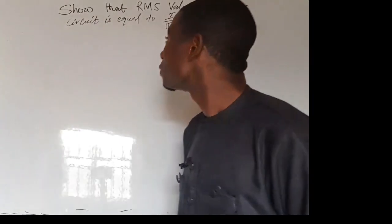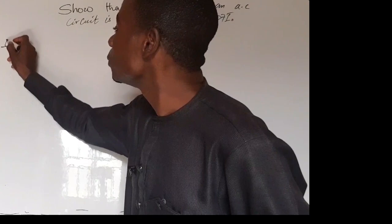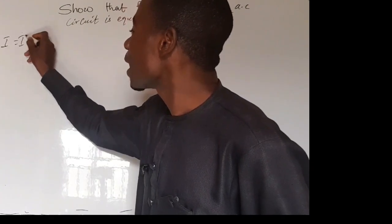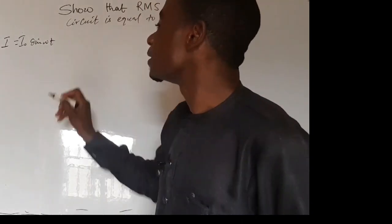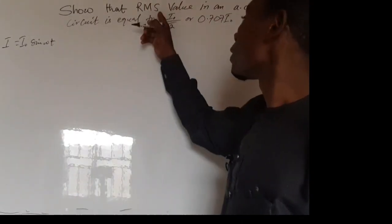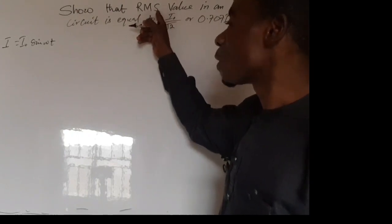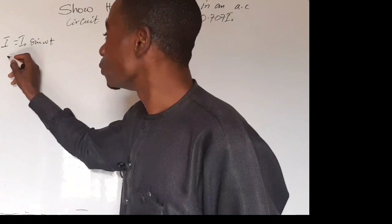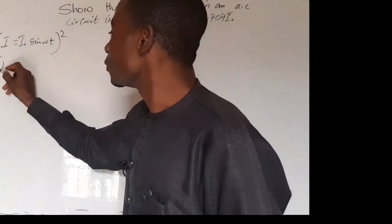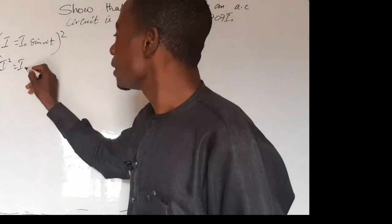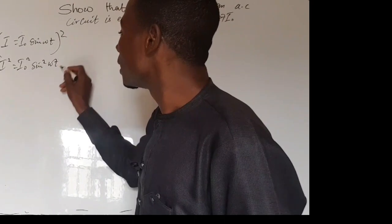So let us go into the whole of the story. We start with the value. In an AC current, the value is I equal to I-naught sine omega T. So we go to the next one — the square. We square the value, so that it gives us I-squared equal to I-naught squared sine-squared omega T.